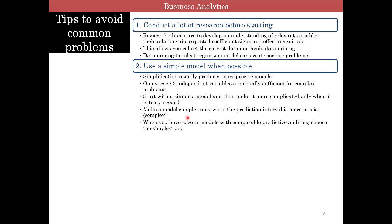Now when you make a model complex by adding another variable, it's only when the prediction interval is more precise. That is, when you do the confidence intervals for the prediction, that it actually becomes narrower. When you have several models with comparable predictive abilities, choose the simple one.